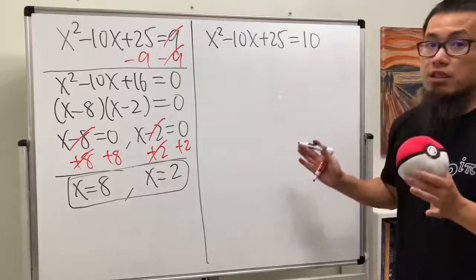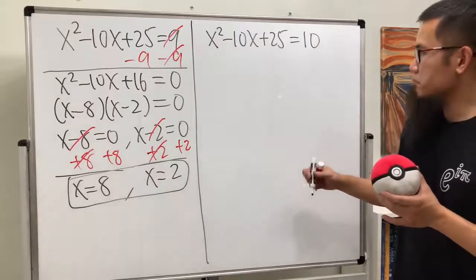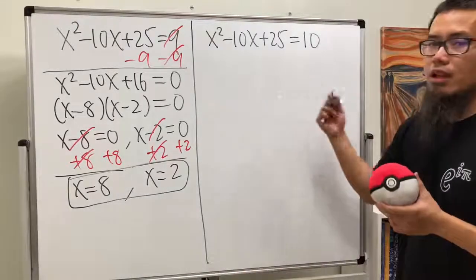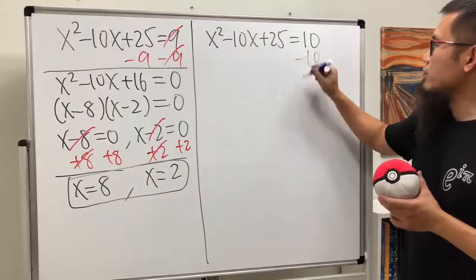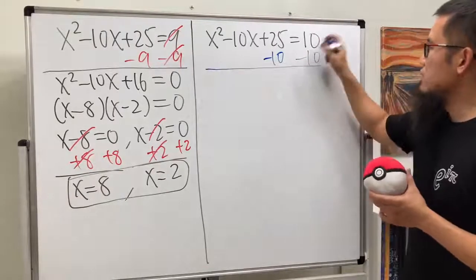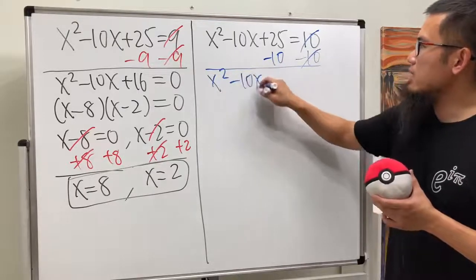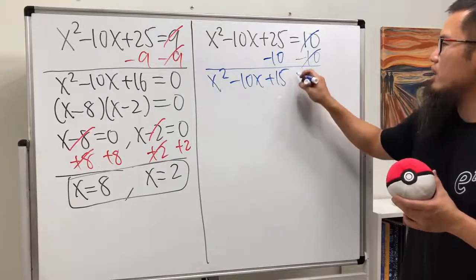Now, the question is, can we do the same for the second one? Let's try it, because why not? So, if we minus 10 on both sides to begin with, let's see. Okay, then what do we get? This and that will cancel, and we get x squared minus 10x plus 15, that's equal to 0.